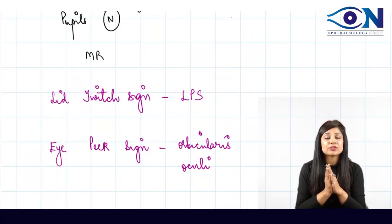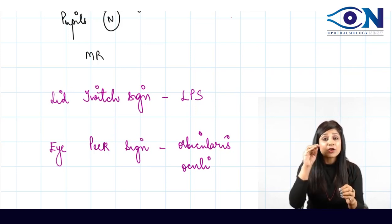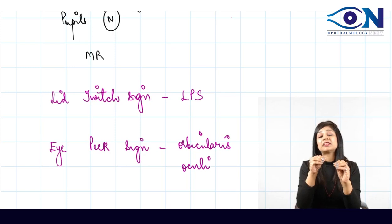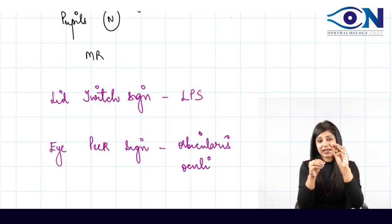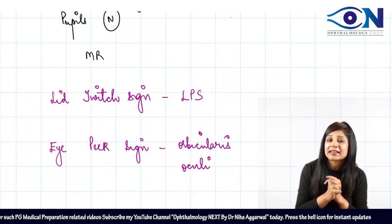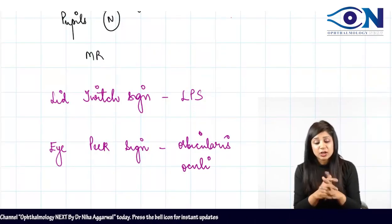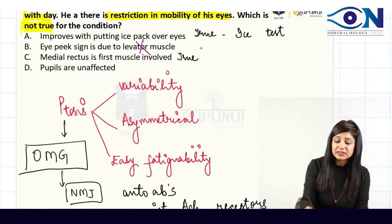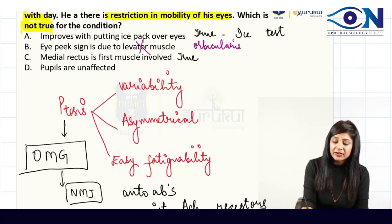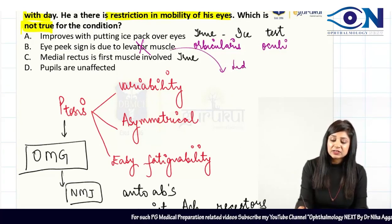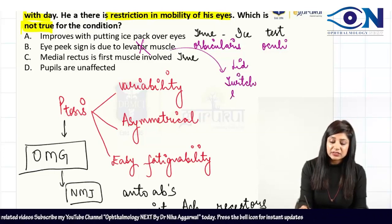The eye peek sign is due to the orbicularis oculi muscle. When you ask the person to close their eyes, the normal eye will close properly, but because of easy fatigability of the orbicularis oculi, the eye affected by myasthenia gravis starts opening up — this peeping of the eye from within the eyelids is called the eye peek sign. So the eye peek sign is due to orbicularis oculi, not the levator muscle. The levator muscle leads to the lid twitch sign.